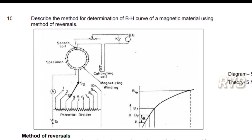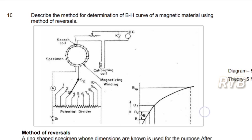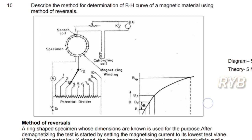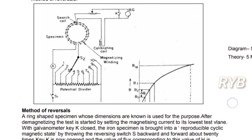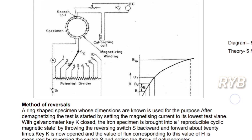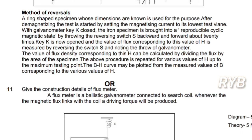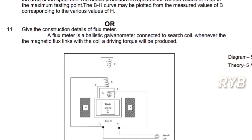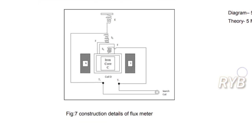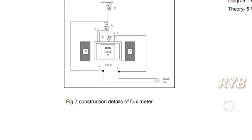Coming to Unit 5: describe the method for determination of BH curves of magnetic material using the method of reversals. In magnetic measurements, the step-by-step method and method of reversals are two methods to find BH curves and the hysteresis loop. Preparing either one will help you get more marks easily. For the flux meter: it is a ballistic galvanometer, similar in construction; the search coil is placed wherever you want to measure the flux. Diagram and theory give 5 out of 5 marks.